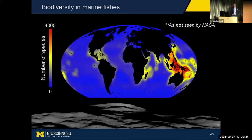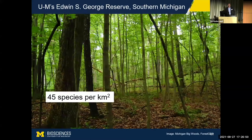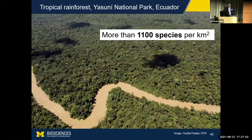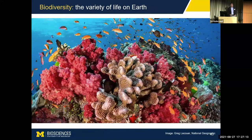This pattern is far more general than simply marine fishes. If you go about 15 miles from here, you can go to the University of Michigan's own E.S. George Ecological Reserve, and in a single square kilometer you can find about 45 species of trees. But if you compare that to the Western Amazon, in a green square kilometer of forest habitat you would find more than a thousand species of trees. I'm a biodiversity scientist, and I study these types of patterns to understand what affects biological diversity on this planet in space and through time.